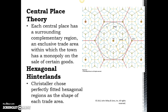When Christaller drew out central place theory, he settled on hexagons as the perfect shape, because circles would cause overlap and squares would not have equal distance from the center in all directions. Each size of city has differently sized hexagons: big hexagons represent big cities with large trade areas, and smaller hexagons represent smaller cities. He uses cities, towns, hamlets, and villages — where hamlets are smaller than villages. Each settlement has its own exclusive trade area where it has a monopoly on the sale of certain goods.